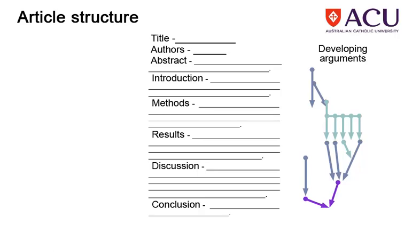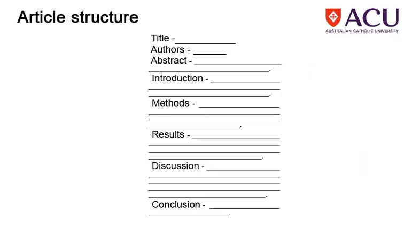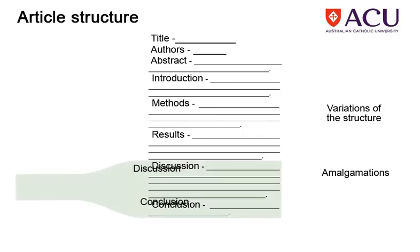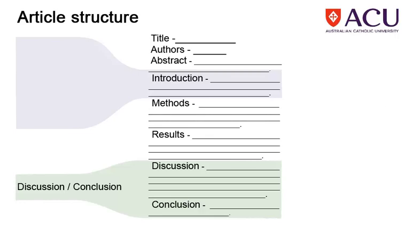While many journals use these terms for headings, variations do exist, both through the amalgamation of sections, for example discussion and conclusion, and by expanding sections into a variety of subsections. A common example is for the introduction to be divided into a shorter introduction with either a literature review and or a theory section.